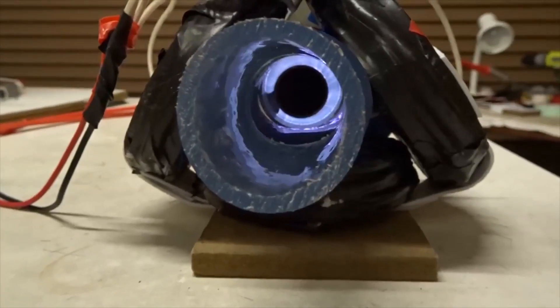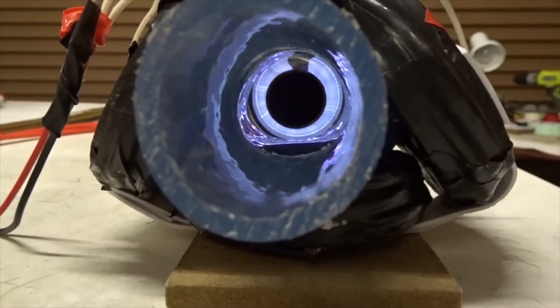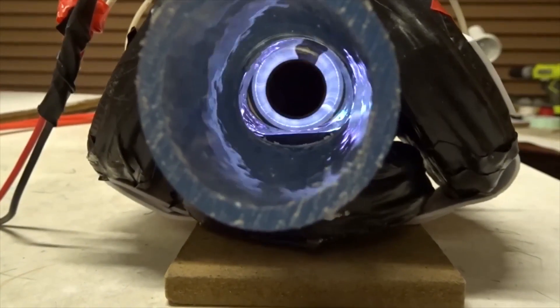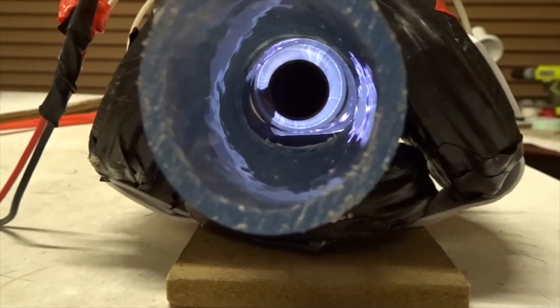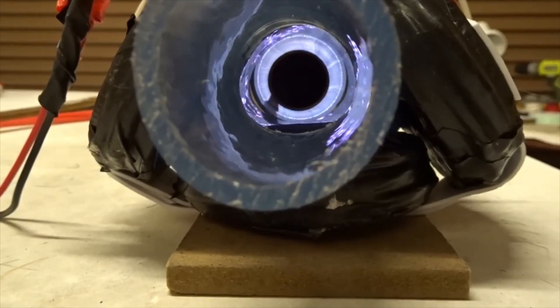Okay, now we have the argon gas spinning very rapidly. Let's see what happens when I add some DC power to the electromagnets which are pointing inward radially.